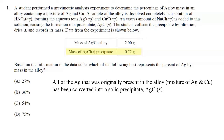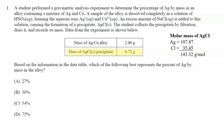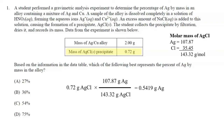Going back to the original alloy, all of the silver present has been converted into a solid precipitate. So how many grams of silver are present in 0.72 grams of silver chloride? We use the periodic table to calculate the molar mass of AgCl, which is 143.32. Starting with 0.72 grams of AgCl, we put grams of silver chloride on the bottom and grams of silver on the top — that's 107.87 grams of silver per 143.32 grams of silver chloride. When we do this math, we get approximately 0.54.